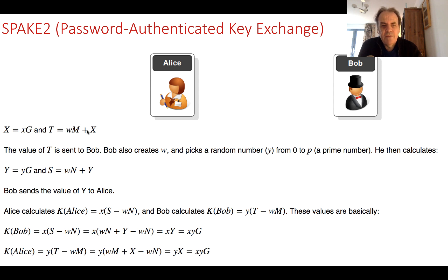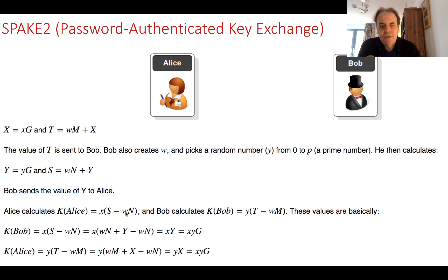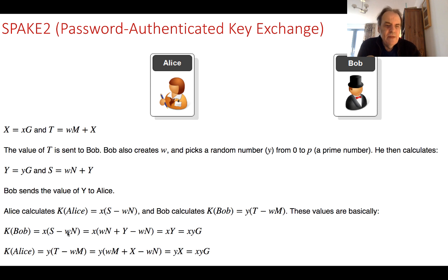Bob sends S to Alice. Alice then calculates the key as x times (S minus w*N) — she knows N and w is the password as an integer value. Bob calculates his version of the key; they should end up with the same key, which is x times y times g. Every single time we run this we will get a new key, and only by knowing the value of w will we be able to derive the same key.